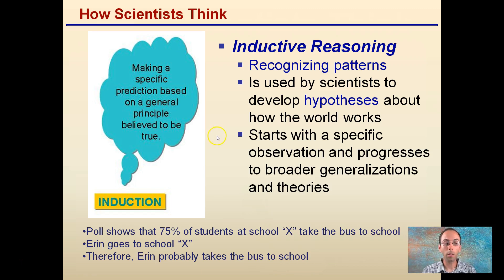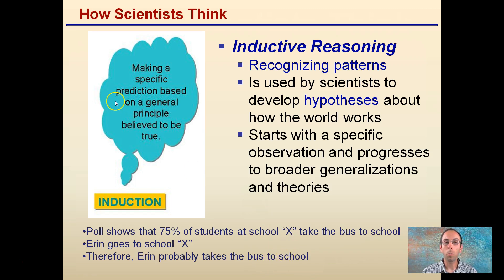An example of inductive reasoning: a poll shows that 75% of students at school X take the bus to school. Aaron goes to school X. Therefore, Aaron probably takes the bus to school. This is inductive reasoning — making a specific prediction based on a general principle believed to be true.